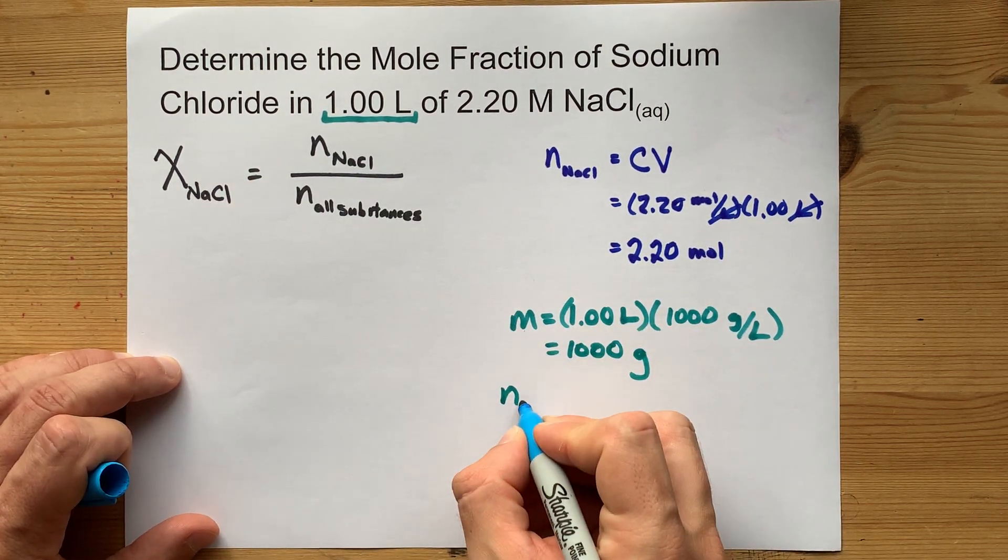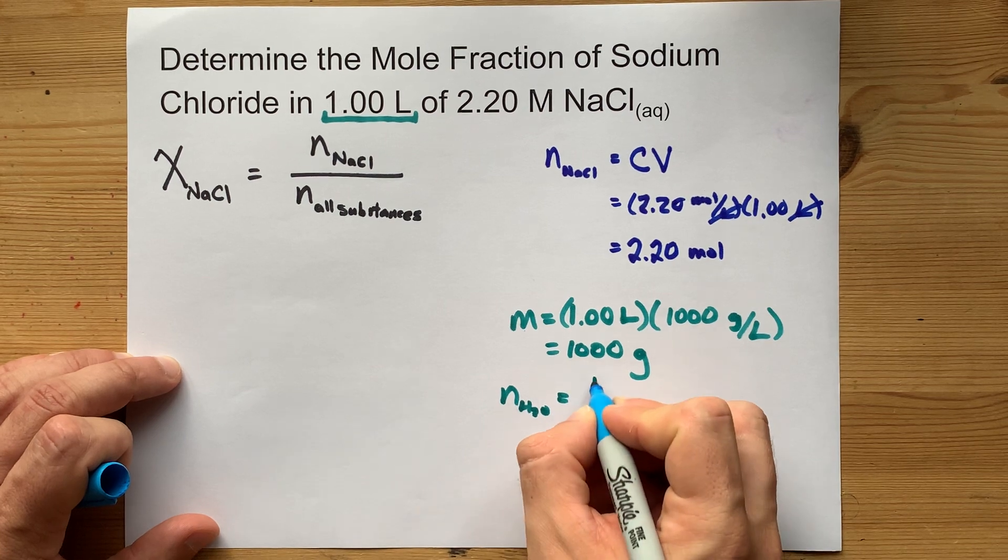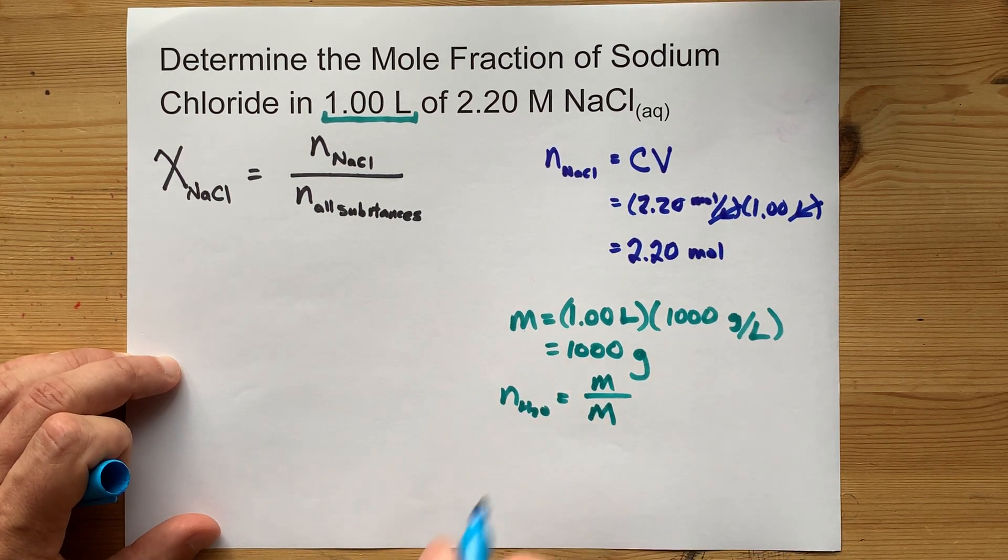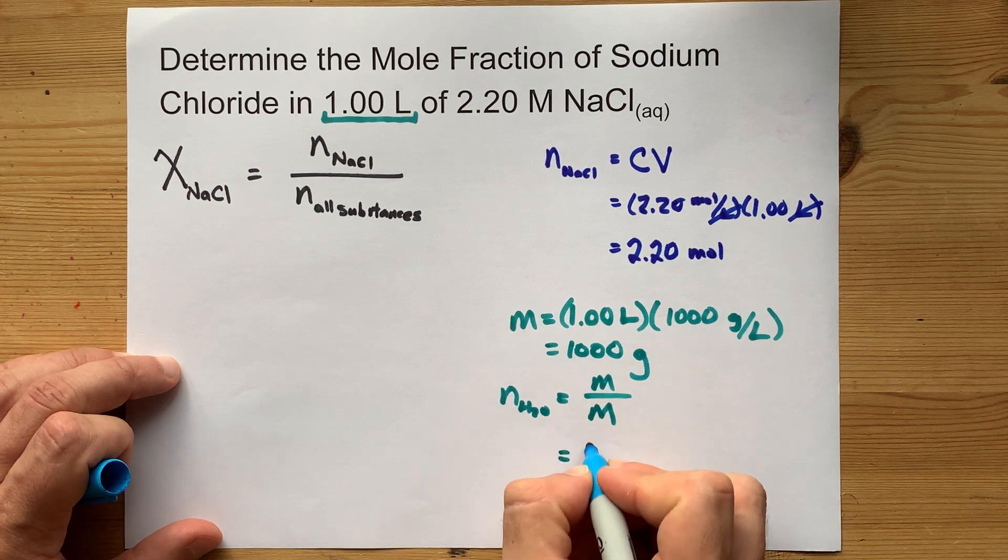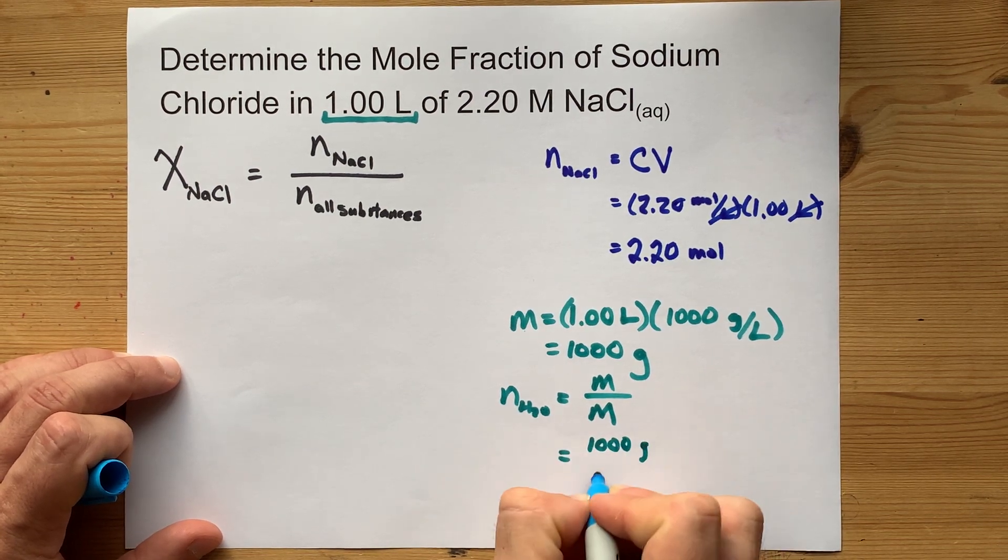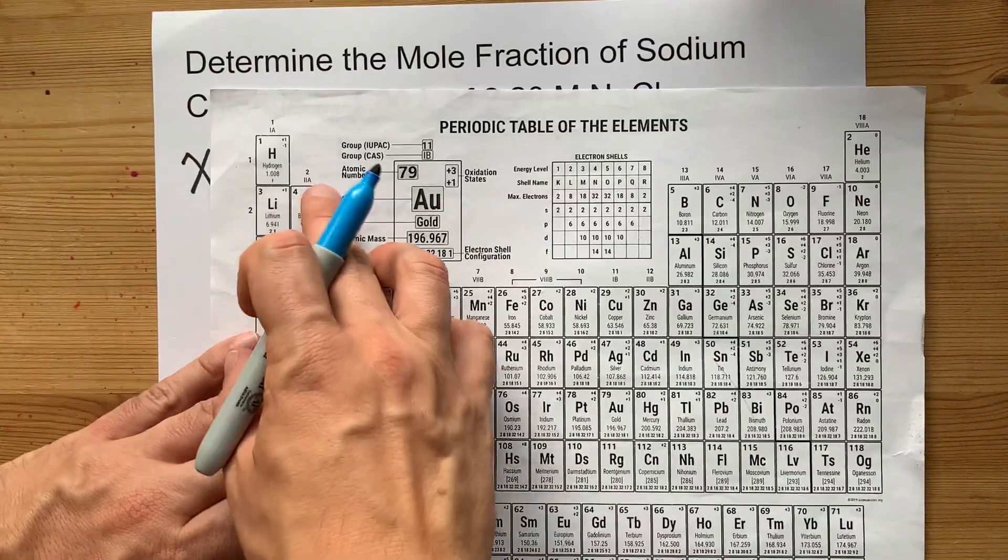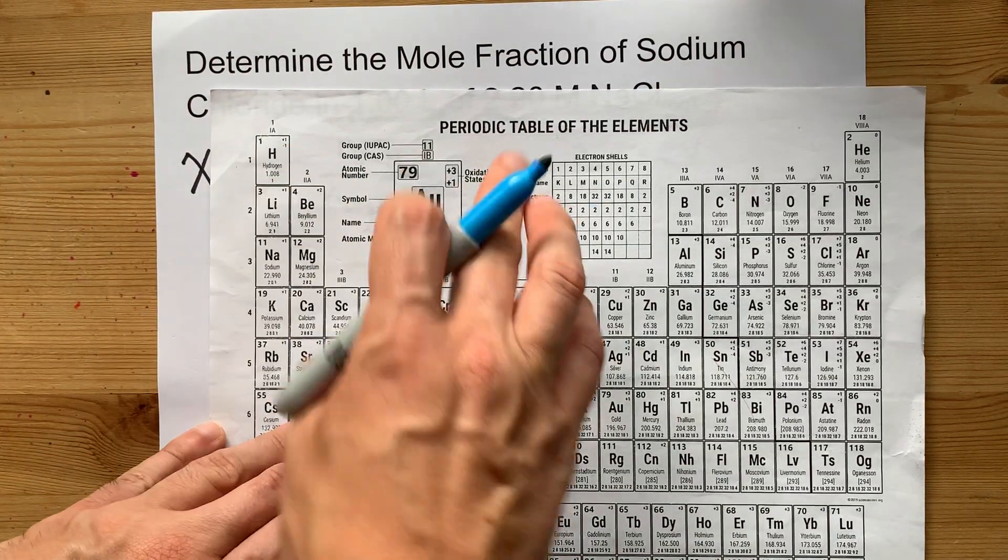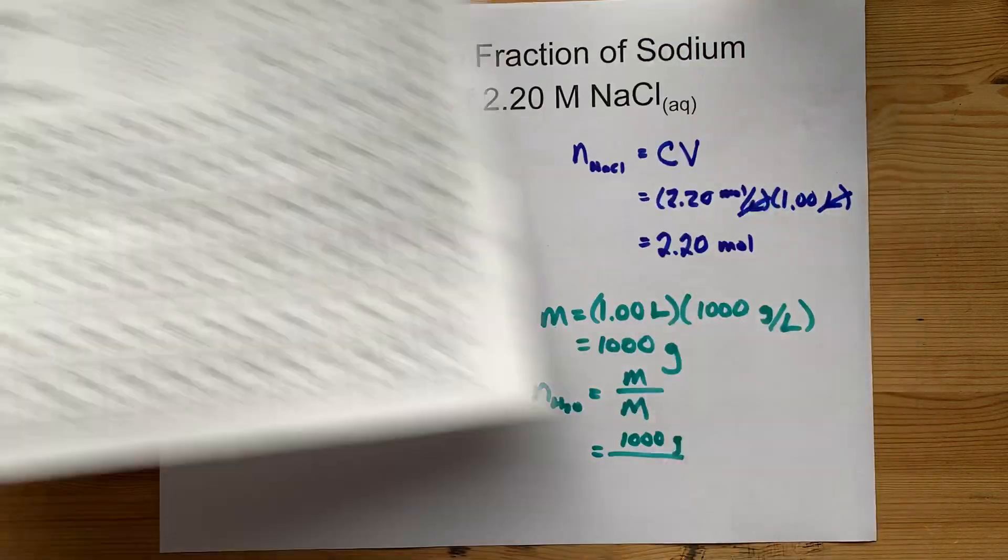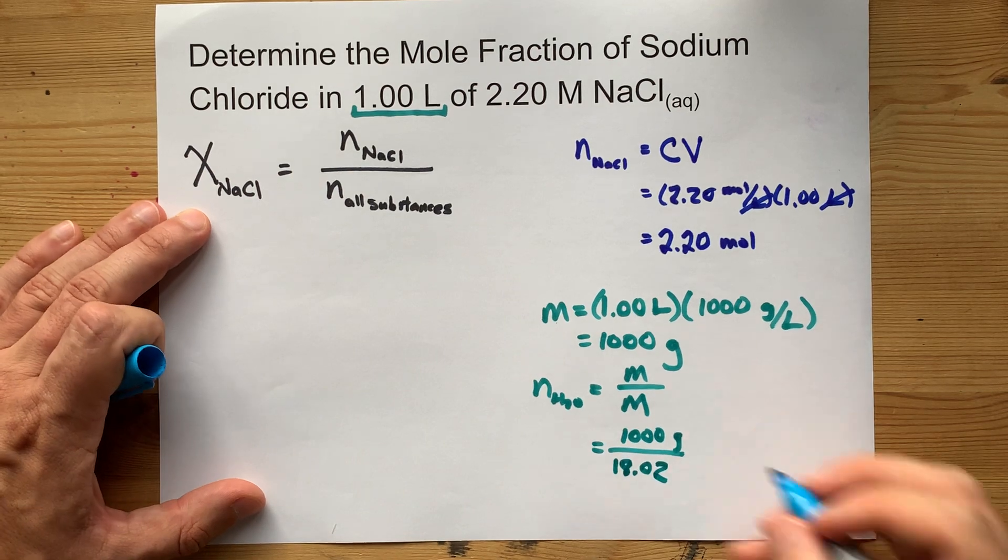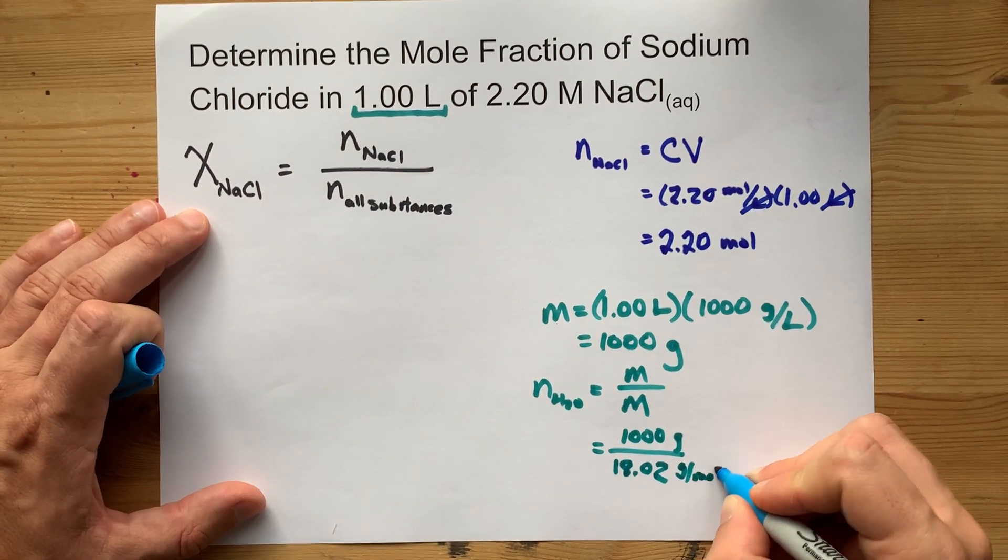Now, the number of moles of water is going to be the mass of water divided by the molar mass, another formula you should probably know by now. That is 1,000 grams. Do you know the molar mass of water? It is 2 times the molar mass of hydrogen plus the molar mass of oxygen. It ends up giving you 18.02 grams per mole.